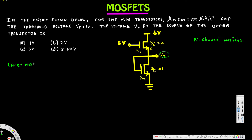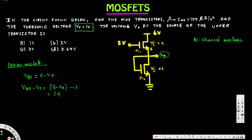Let's look at the upper MOSFET. To find its region, we first calculate VDS. The drain is at 6V and the source is Vx, so VDS equals 6 minus Vx. Next, VGS minus Vt: the gate is at 5V and the source is Vx, so VGS equals 5 minus Vx. With Vt equal to 1V, VGS minus Vt equals 5 minus Vx minus 1, which simplifies to 4 minus Vx.